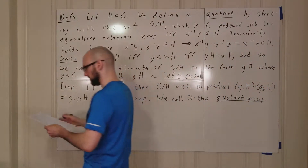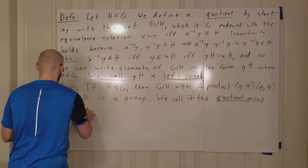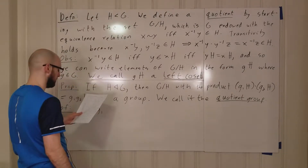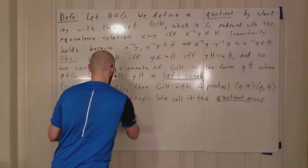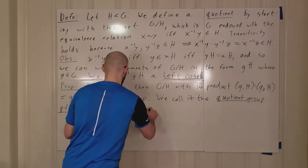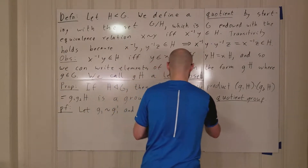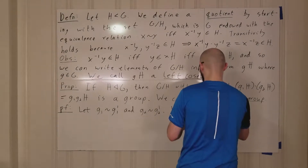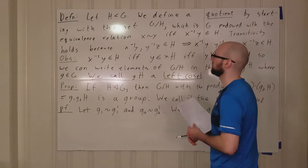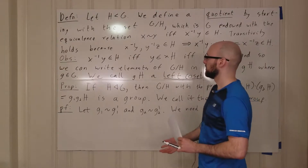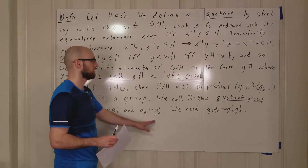Let's prove that this works. Let g1 be equivalent to g1 prime, and g2 be equivalent to g2 prime. We need to show that g1g2 is equivalent to g1 prime g2 prime. Why is that what we're looking for? Because g1 and g1 prime belong to the same coset, and g2 and g2 prime belong to the same coset.